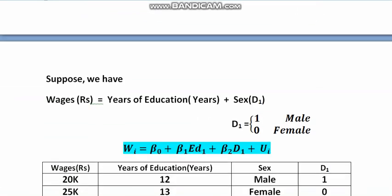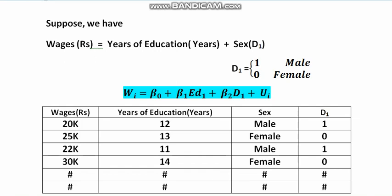You may be more clear with one simple example. Suppose we have wages as a function of years of education and gender or sex. What we're saying is that years of education affects your wages or salary, and also your type of gender affects the wages. Here in this gender or sex, we have included one dummy variable, D₁, where D₁ equals 1 for male and 0 for female.